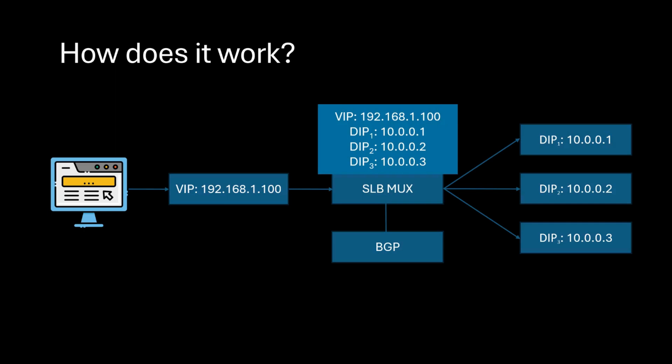So now with SLB, how do you ensure that the packets can go to any of these three VMs? What you do is you define a virtual IP, which is also called a VIP, and the clients who are trying to access your application are now sending the packets to the VIP instead of the IP addresses of your individual VMs, which are called DIPs. So in this case the DIPs are 1001, 1002, and 1003 — these are the actual IP addresses of where the application is hosted.